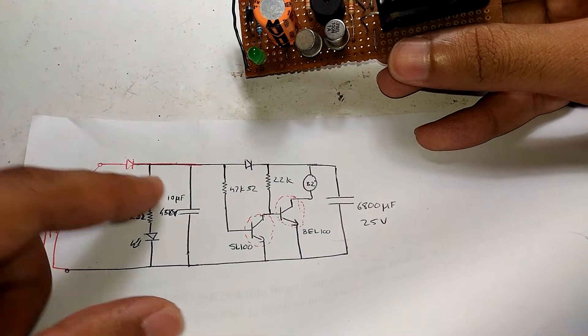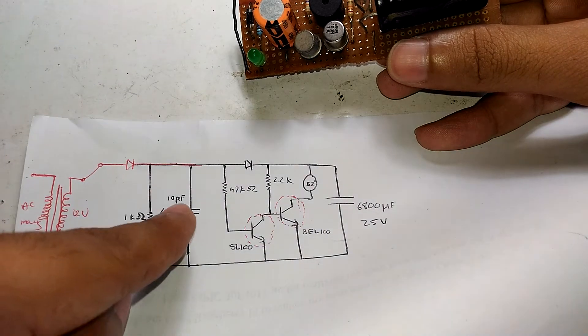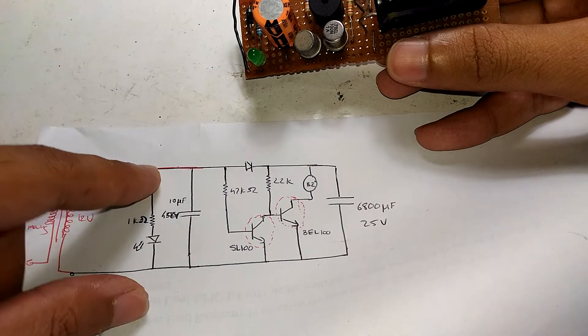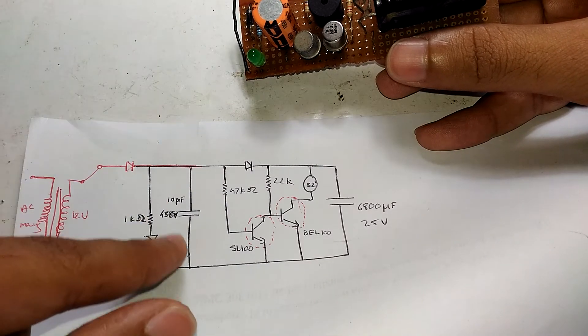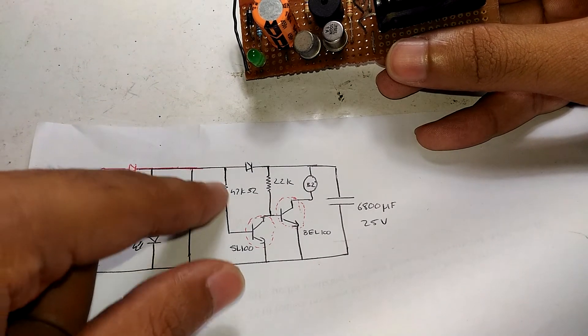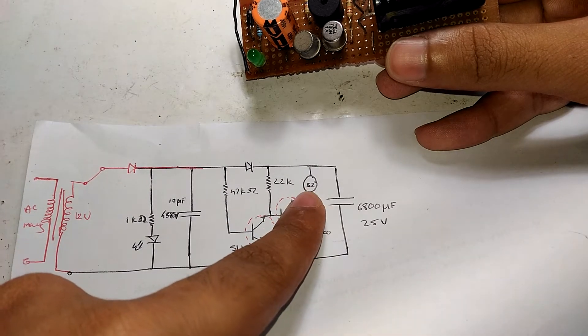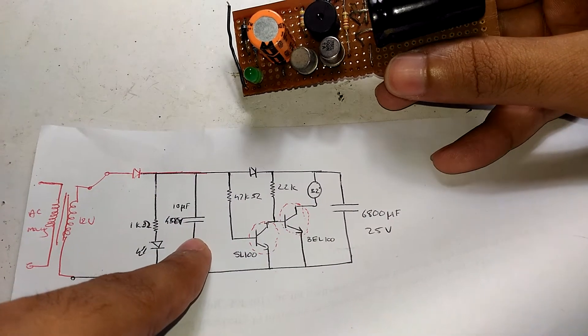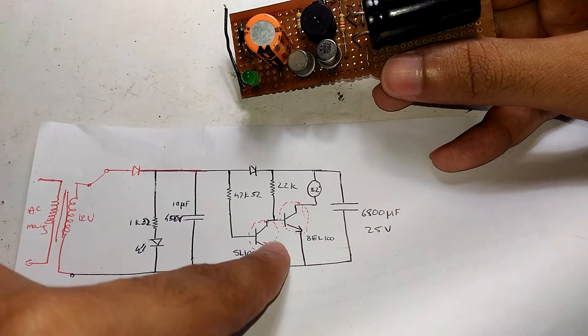With this capacitor, when power goes out and instantly comes back on, without it the buzzer would instantly trigger. But now, this capacitor gives enough base current so it won't activate the buzzer. It takes around one or two seconds for this capacitor to discharge through this transistor.